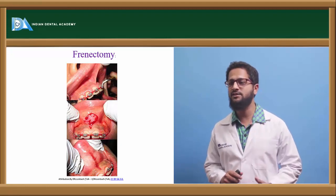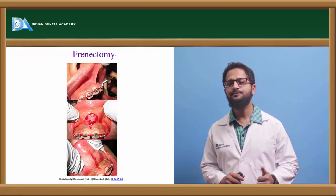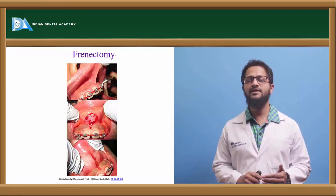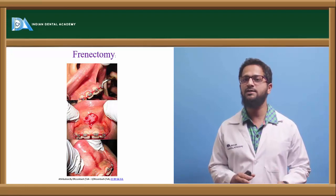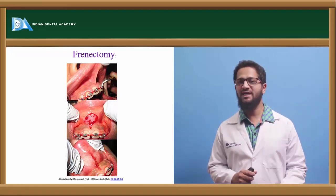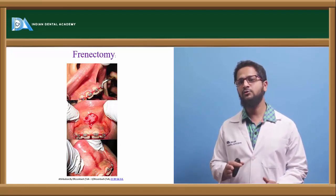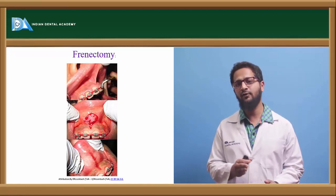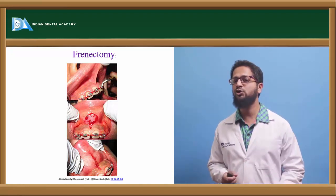Next is frenectomy. The thick labial frenum has to be removed — this is called the frenectomy procedure. The presence of a thick labial frenum is evaluated using the blanch test. There are two schools of thought: one says frenectomy should be performed prior to orthodontic treatment, and the other says it should be done after orthodontic treatment to prevent scar formation.